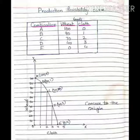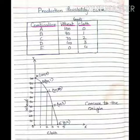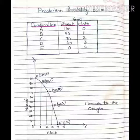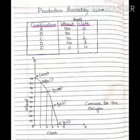Next to each point on the curve we write the combination values: A is (100, 0), B is (90, 1), C is (70, 2), D is (40, 3), and E is (0, 4). This curve that we have drawn is Concave to the Origin — it takes a concave shape.